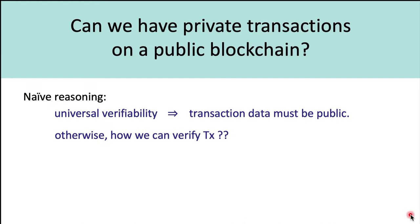Remember that one of the basic properties of a blockchain is that we have universal verifiability — anyone can verify that the rules of the blockchain are being followed, and only valid transactions are posted. Naively, you would think that if we want to support universal verifiability, all transaction data must be public. Otherwise, how do we verify that the transactions are valid?